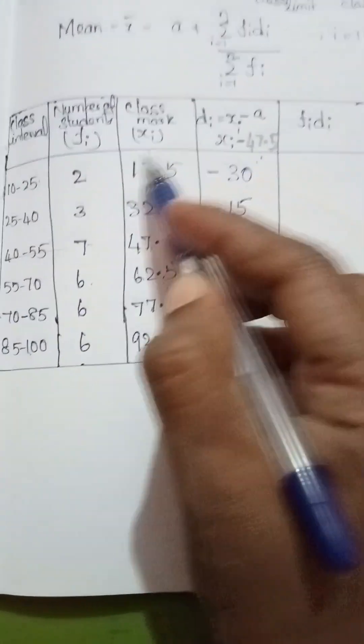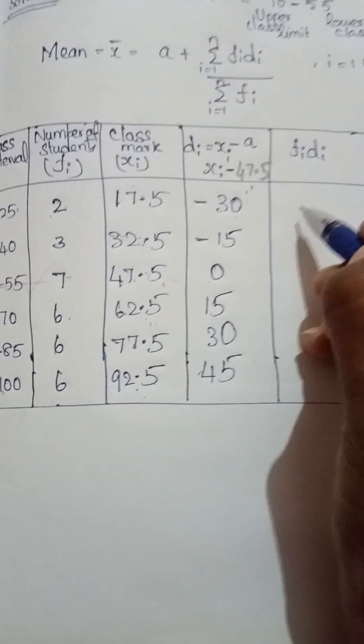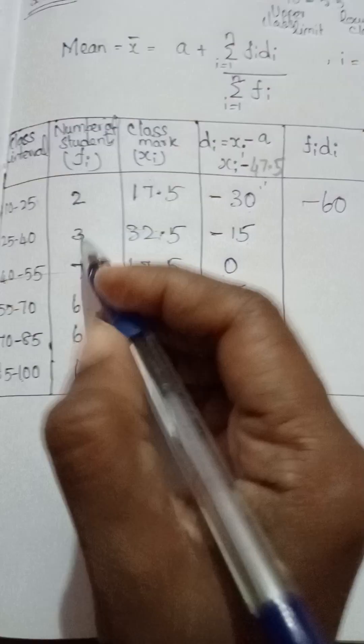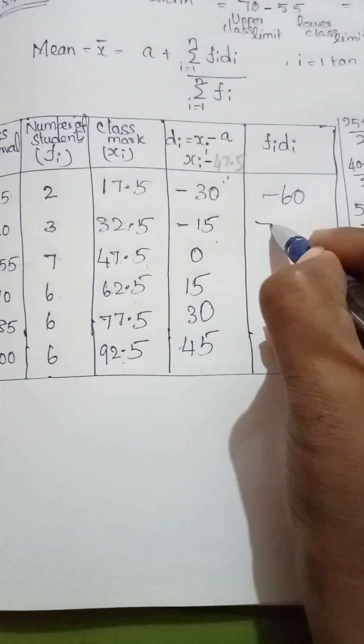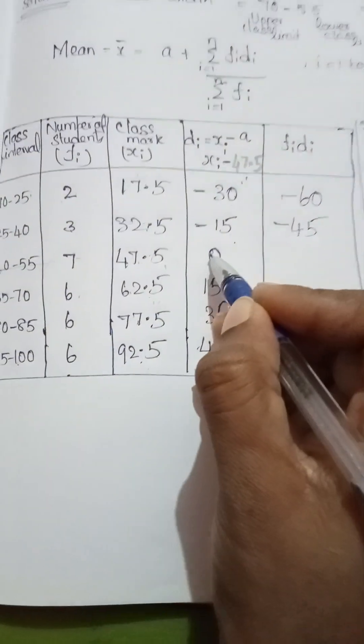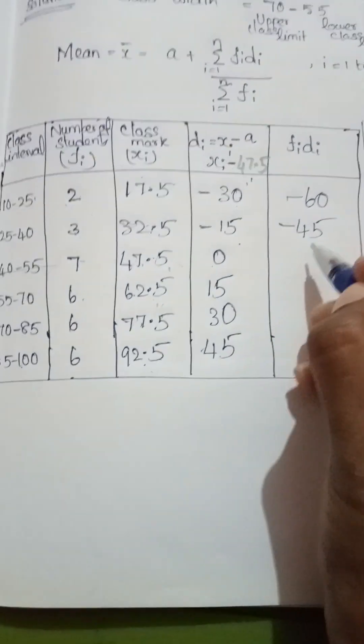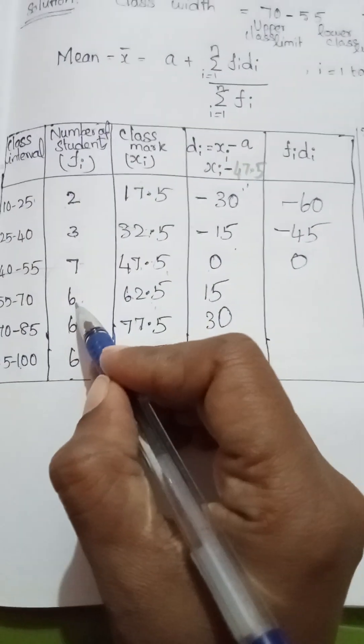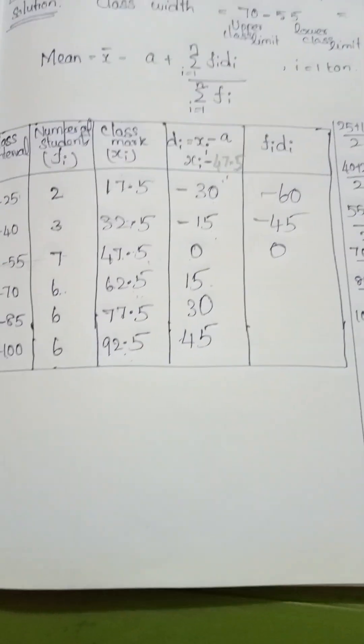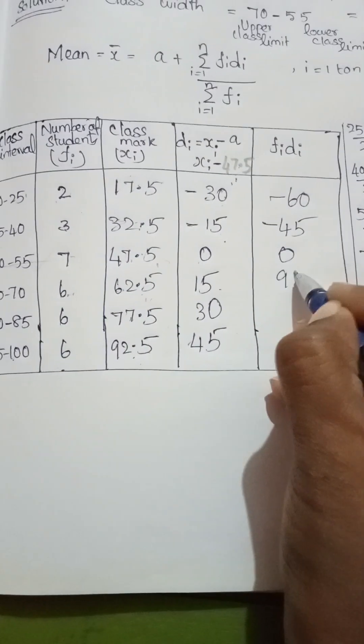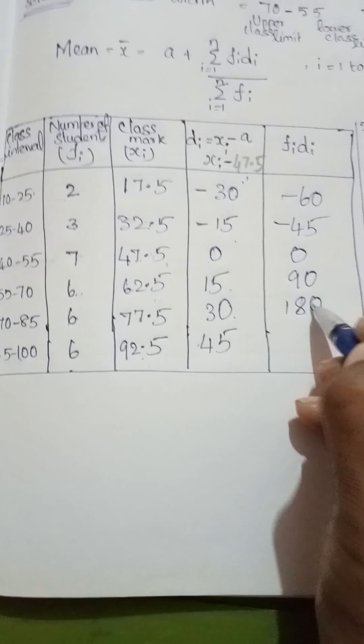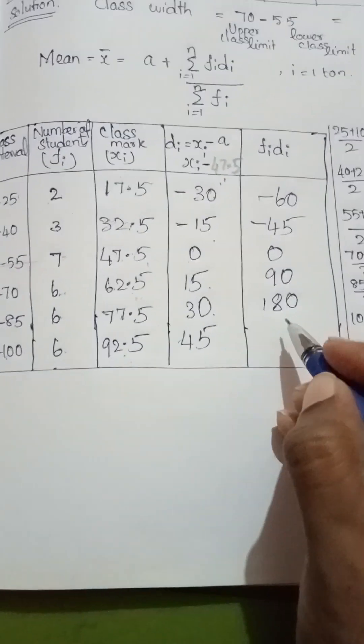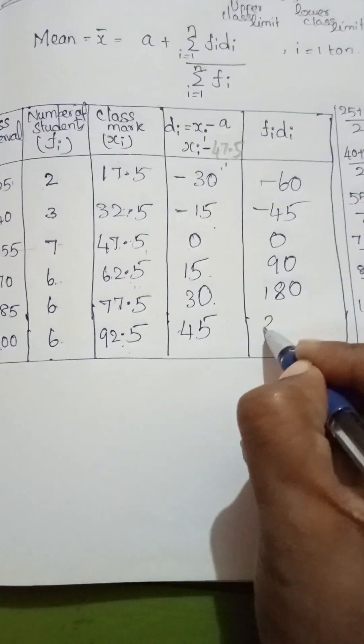Next one fi into di. So 2 into minus 30 equals minus 60. 3 into minus 15 equals minus 45. 7 into 0 equals 0. 6 into 15 equals 90. 6 into 30 equals 180. 6 into 45 equals 270.